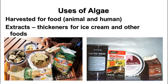Algae is used for lots of different things. Many people and animals worldwide use algae for food, and there are also derivatives of algae used in many products. The agar we use to grow bacteria in lab is made from an algae extract. There are also thickeners and emulsifiers in foods like ice cream—Blue Bell ice cream, for example—that come from algae products.